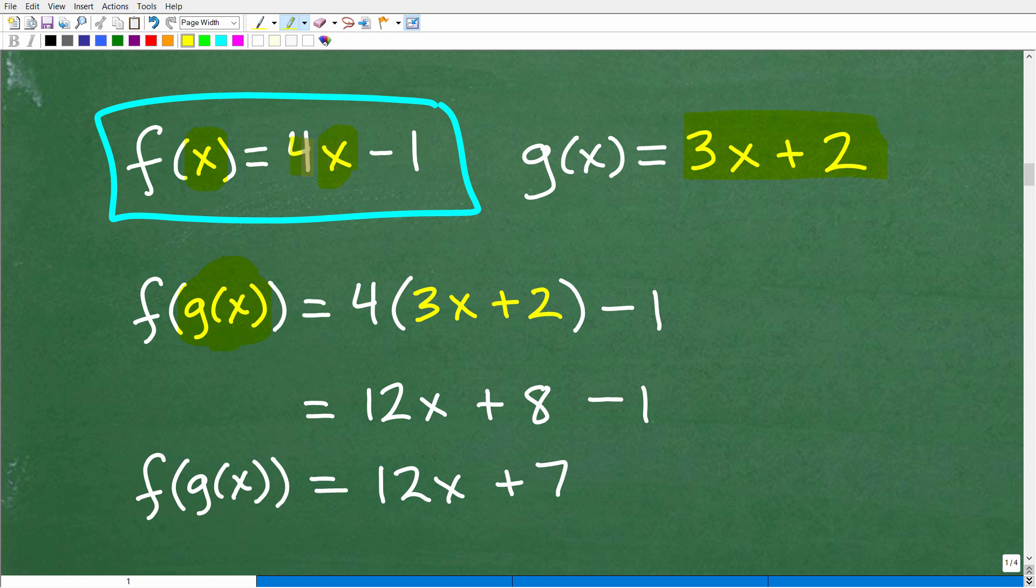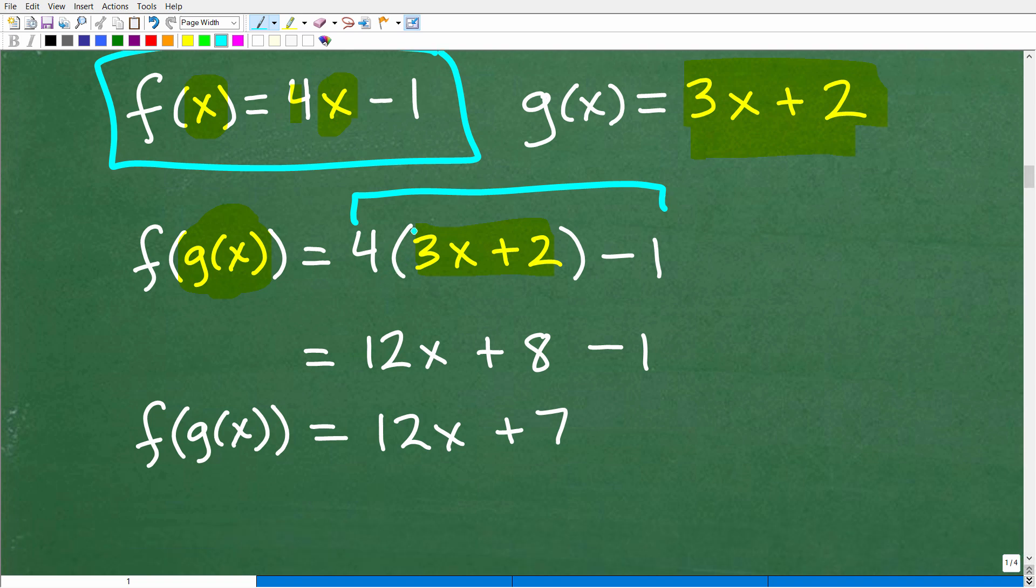So instead of 4x, we're going to have 4 times 3x plus 2, which is the g(x) function. And now what we have to do is just basically do the simple algebra to clean this up. So we're going to use the distributive property here. So 4 times 3x is 12x. 4 times 2 is 8 minus 1.